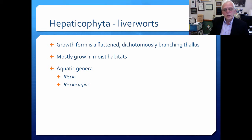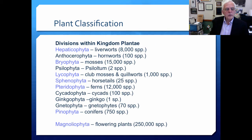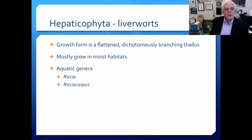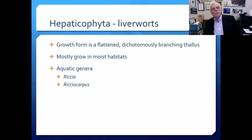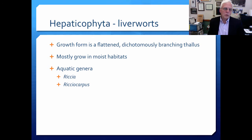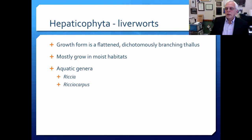So we can talk about these each in sequence, following this list. In the Hepaticophyta, the growth form is very flattened — and this means liverwort. The hepatico- prefix refers to the liver, so Hepaticophyta are sort of liver-like. The growth form is flattened, they're dichotomously branching thalli, and they mostly grow in moist habitats, although they can live totally in aquatic environments too.